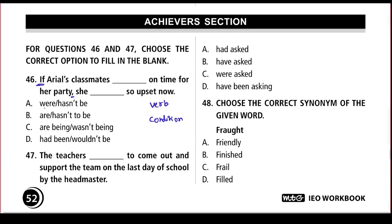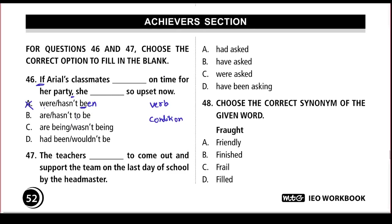Looking at the first option, it says 'were' and 'hasn't be.' We can't use 'be' with 'hasn't' — there's a specific rule that with 'has' we always use the form 'been.' Since this condition isn't met, we can simply eliminate it. Similarly, 'hasn't to be' is an infinitive and cannot be placed here, so we eliminate this option as well.